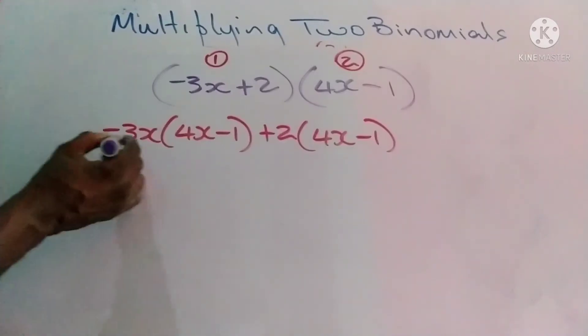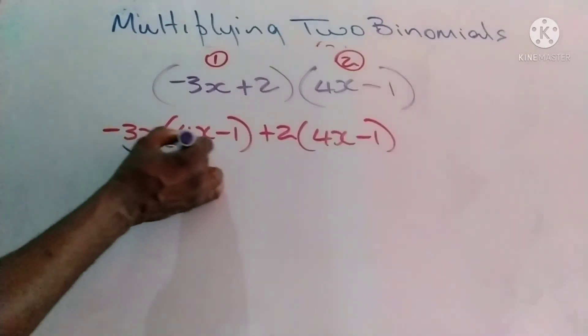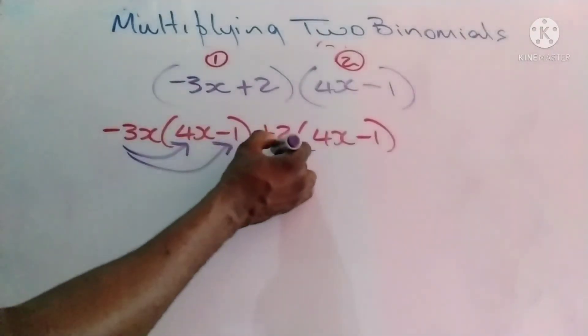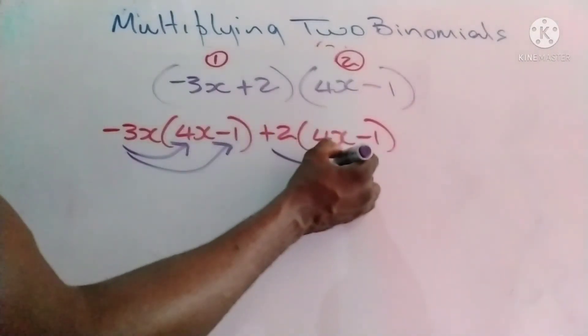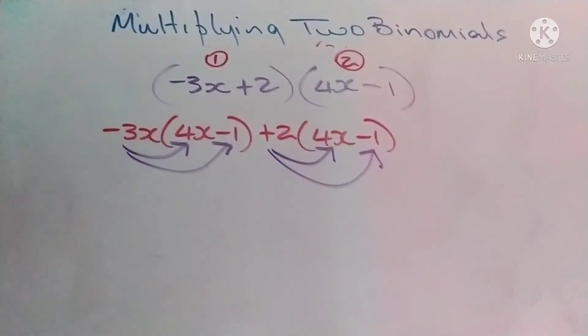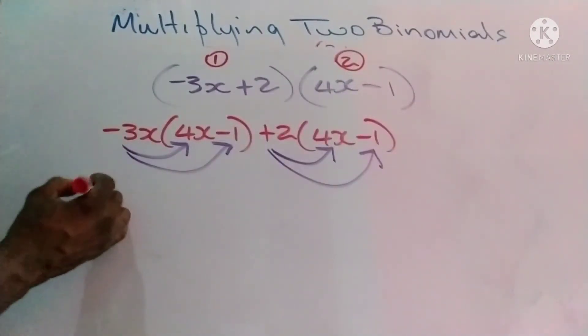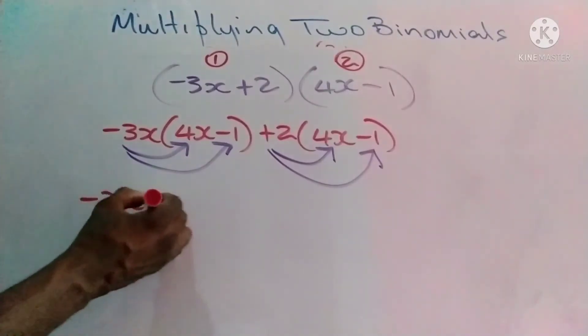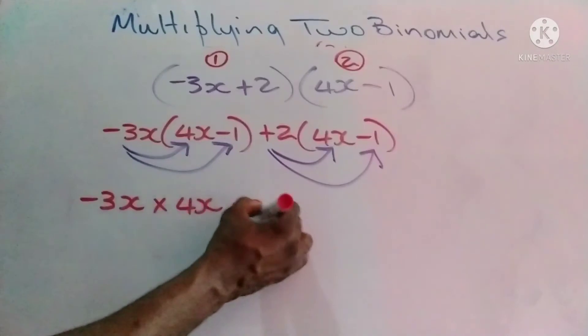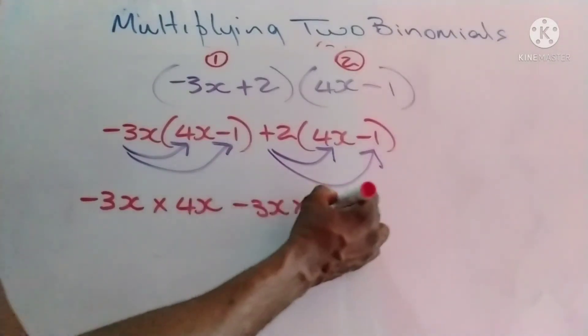Let's carry out our distribution. Negative 3x will go with positive 4x. Negative 3x will go with negative 1. Positive 2 will go with positive 4x. Positive 2 will go with negative 1. We have negative 3x times 4x.